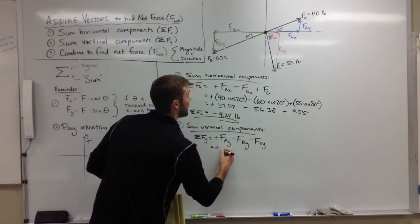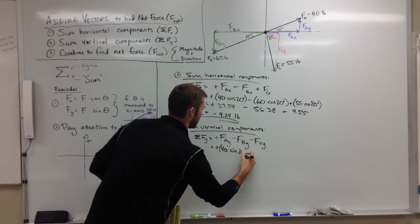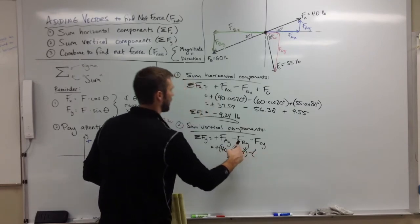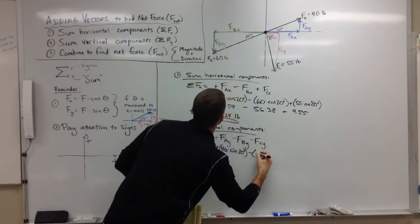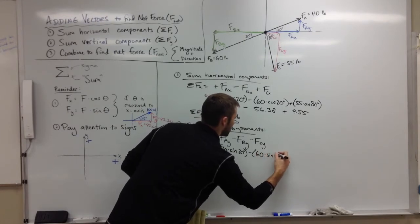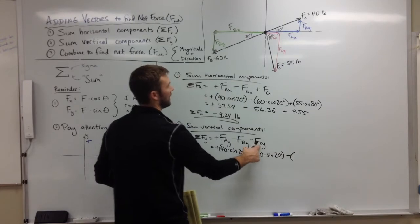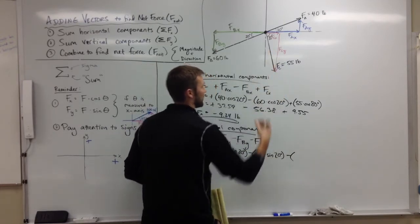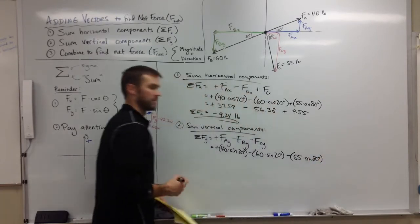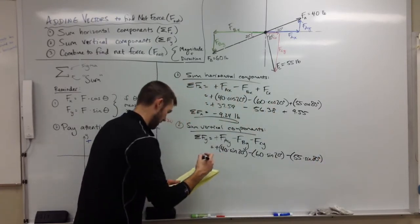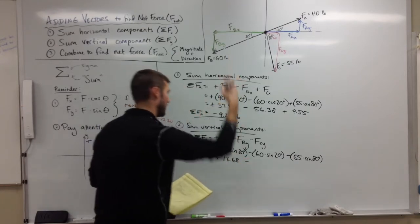So FA's y component is FA, 40 times the sine of theta, minus FB's y component is going to be FB sine 20, FB is 60 times the sine of 20 degrees, minus FCy is FC times the sine of 80, so minus 55 sine of 80. Plugging that in, check it out, see what we get. We get positive 13.68 from FAy pointing it up.